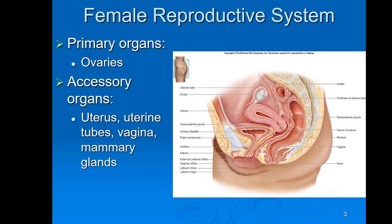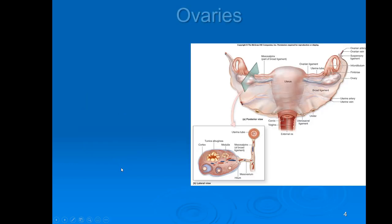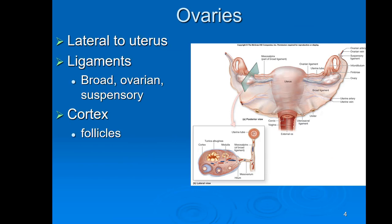We're going to start with the female reproductive system. The primary organs are the ovaries — there are two ovaries. Accessory organs include the uterus, the uterine tubes also known as fallopian tubes, the vagina, and mammary glands in the breast. The ovaries are lateral to the uterus and suspended by ligaments: the broad ligament, the suspensory ligament, and the ovarian ligament, which connects them back to the uterus.